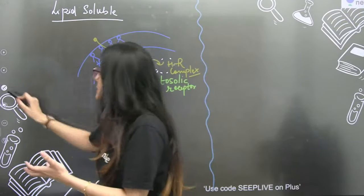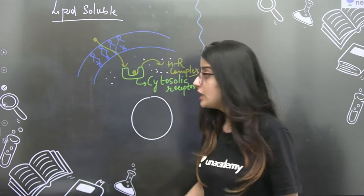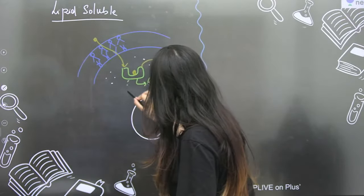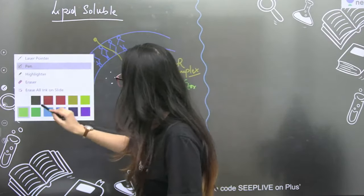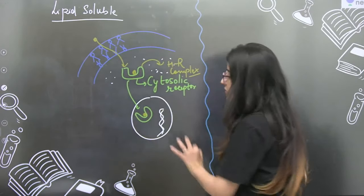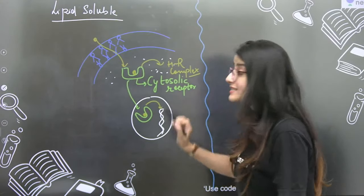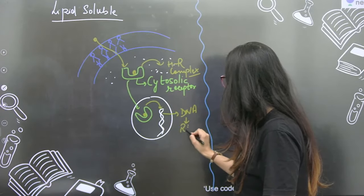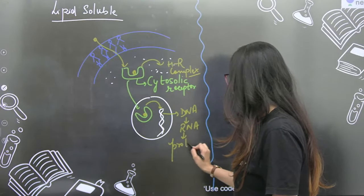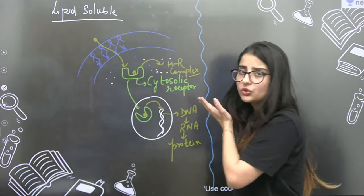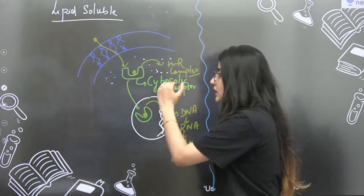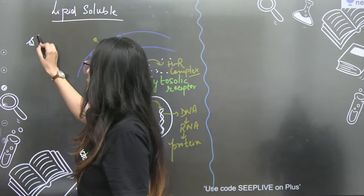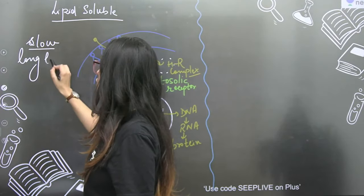Then this hormone-receptor complex will enter the nucleus. They are going to enter into the brain of the cell. Who is the brain of the cell? Who has the DNA? That is basically nucleus. Inside the nucleus, what will they influence? They are going to influence the genetic material of the cell, the DNA of the cell. If DNA is influenced, what will it influence? RNA. If there will be change in RNA, what will change? Protein. So the lipid soluble hormones show action in the target cell by going to the target cell, connecting with the receptor, entering the nucleus, and doing genetic alteration in the nucleus. The response is slow but long-lasting.